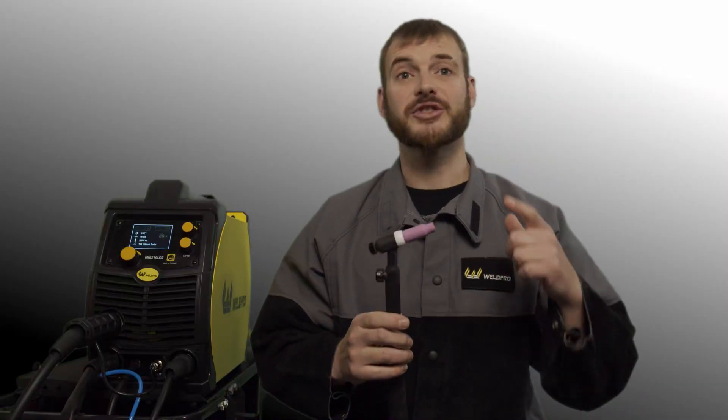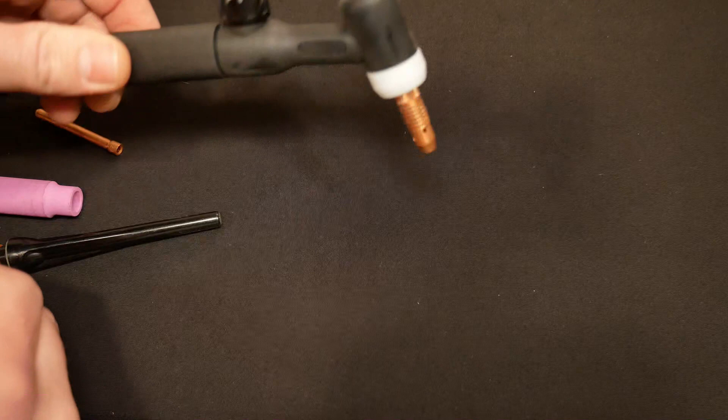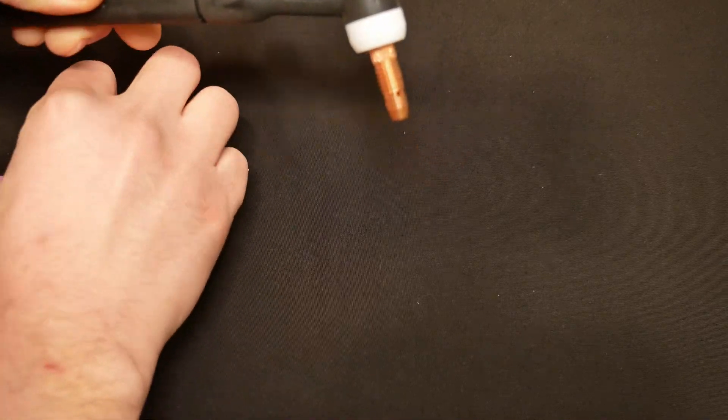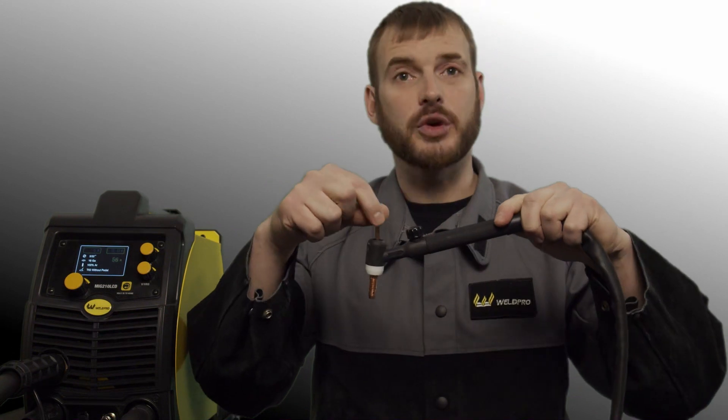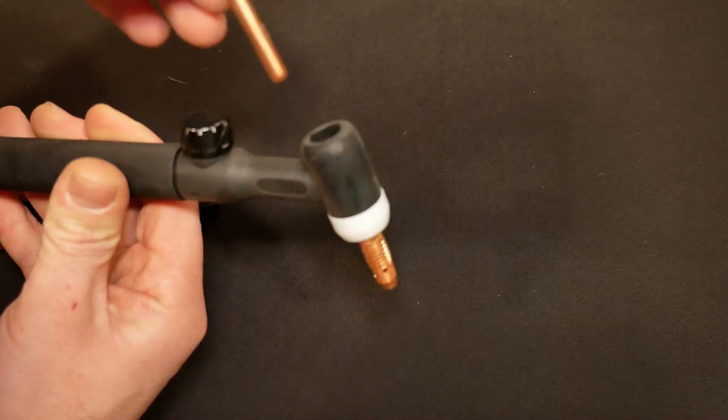Next let's go ahead and install the consumables in our TIG torch. Begin by disassembling your TIG torch. You can leave this collet body installed. The second step is to insert the collet in the back of the torch body so that it seats into the collet body.